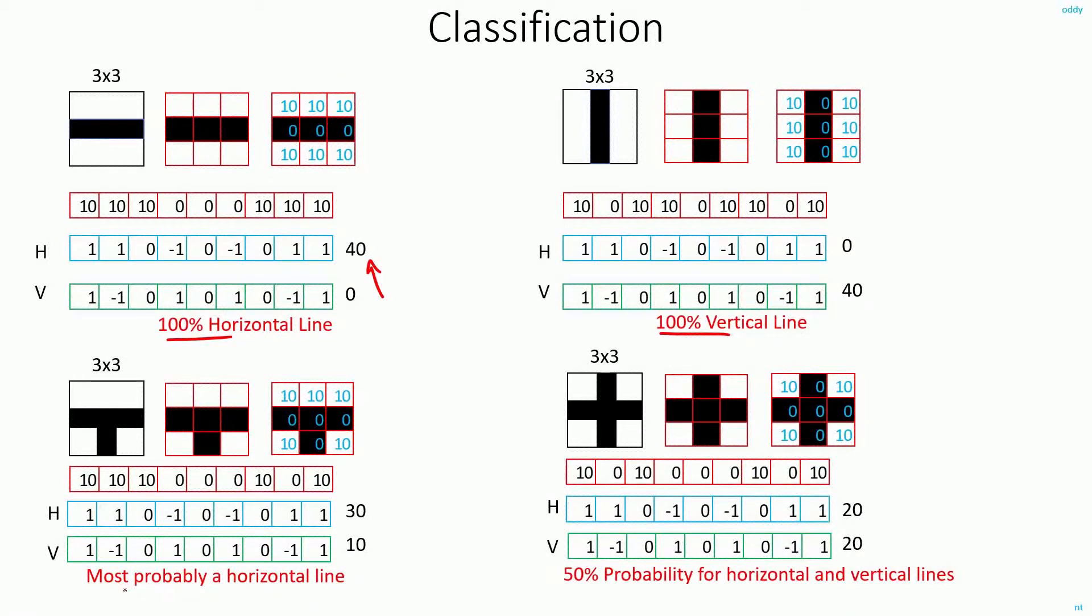In the third case, I can say it's most probably a horizontal line. And in the fourth case, the probability or the confidence score is just 50%. By looking at these two values, I can draw all these conclusions. But here, I have just the number of classes in my data set is just 2.